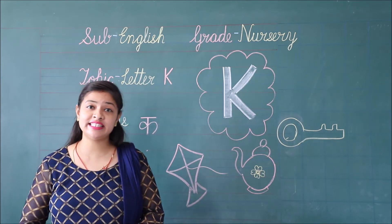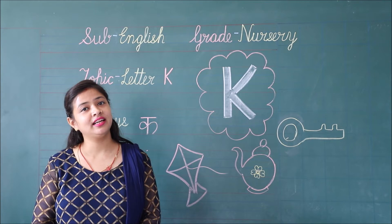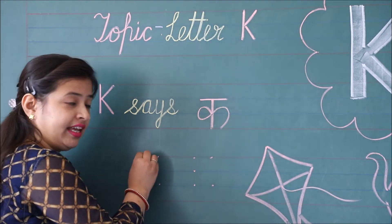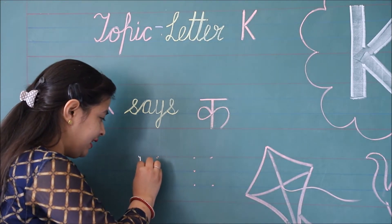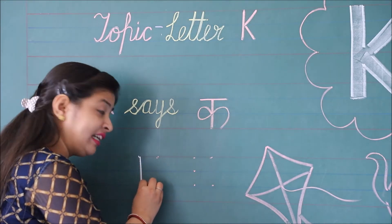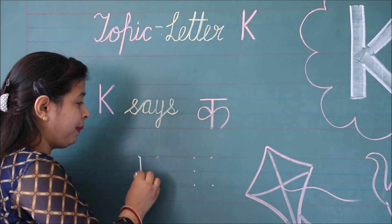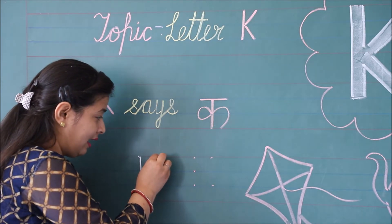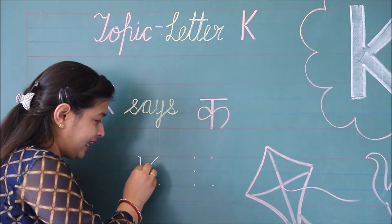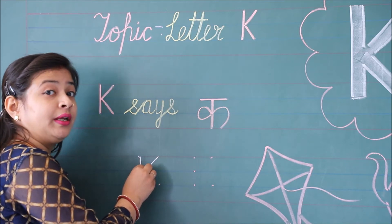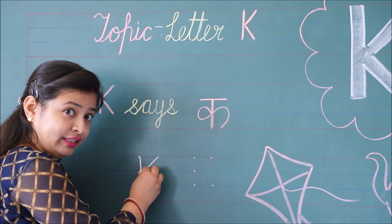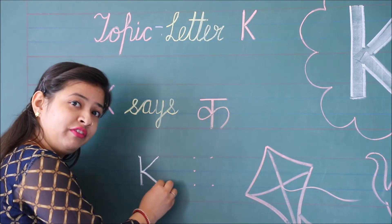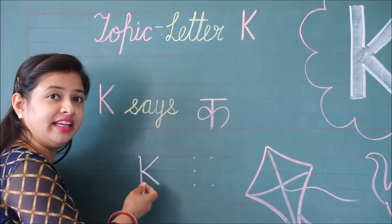Students, let's learn how to write letter K. Keep your pencil on the first line dot and make a standing line to the third line dot. Then keep your pencil on the first line's second dot and make a slanting line to the second line dot. Then keep your pencil from the second line dot and make another slanting line to the given dot of the third line. Letter K is ready.